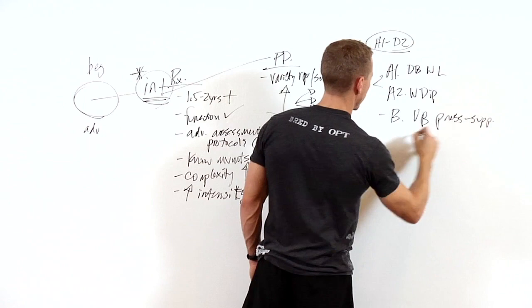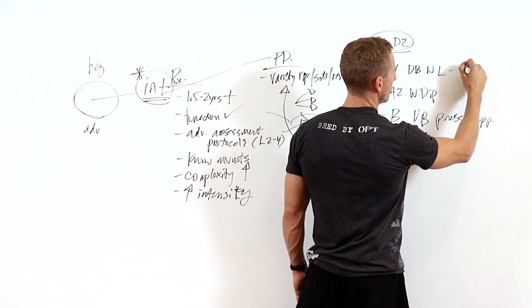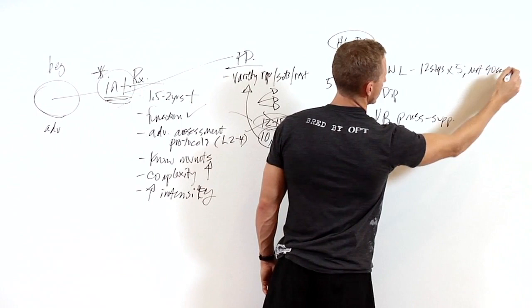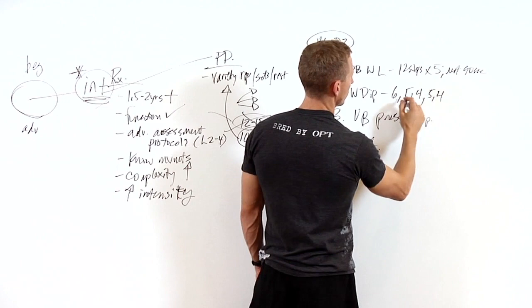You can see the prescription now, because these guys may do 5 sets here, 5, 2, and 2. Dumbbell walking lunge, 12 steps times 5 sets, rest 90 seconds based upon the repetitions. Weighted dip, they're going to do 6, 5, 4, 5, 4, 1, 2, 3, 4, 5 sets, rest 90 seconds.